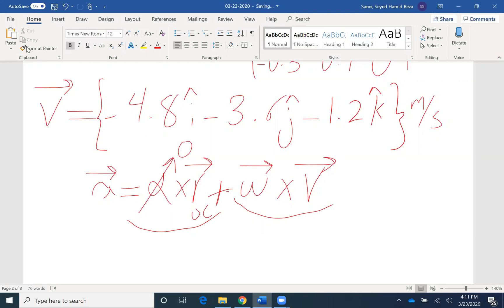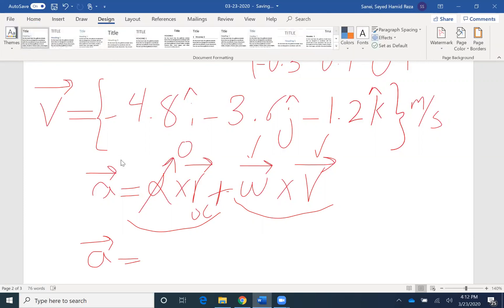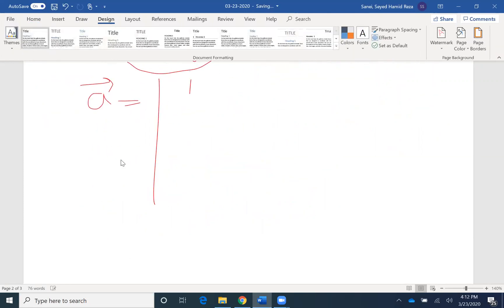We know omega in vector form, we found velocity, so we can easily find acceleration. A would be the definition of a cross product. So let me write it here. i, j, k. The second row would be our omega, which we found it to be negative 6, 4, 12. And the third row would be our velocity, we just found negative 4.8, negative 3.6, and negative 1.2.